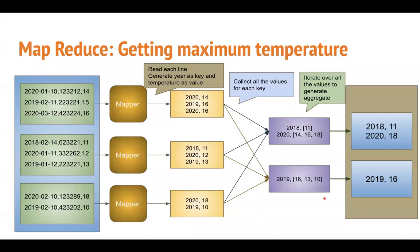Each reducer operates in parallel and produces an output file which can be inside the same directory. You distribute the load of reading the file and performing the aggregation, you can control the parallelism, and that gives you immense speed benefit. MapReduce has been battle-proven - it's been there for about two decades overall and more than one decade in commercial distributions, and it has solved the problem of performing complex computations on large data scale.